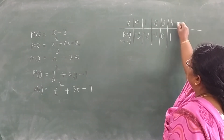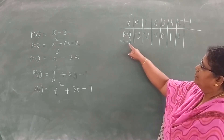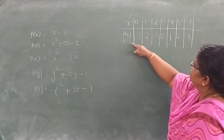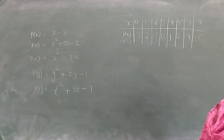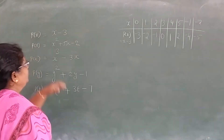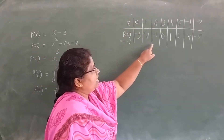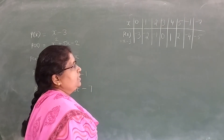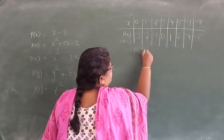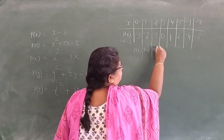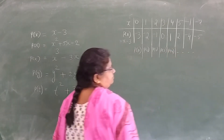If I put x equal to 4, then 4 minus 3 is 1. If I put x equal to 5, then 5 minus 3 is 2. If I put x equal to negative 1, then negative 1 minus 3 is negative 4. If I put x equal to negative 2, then negative 2 minus 3 is negative 5. So minus 3 is p(0), minus 2 is p(1), minus 1 is p(2), 0 is p(3), 1 is p(4), and so on.